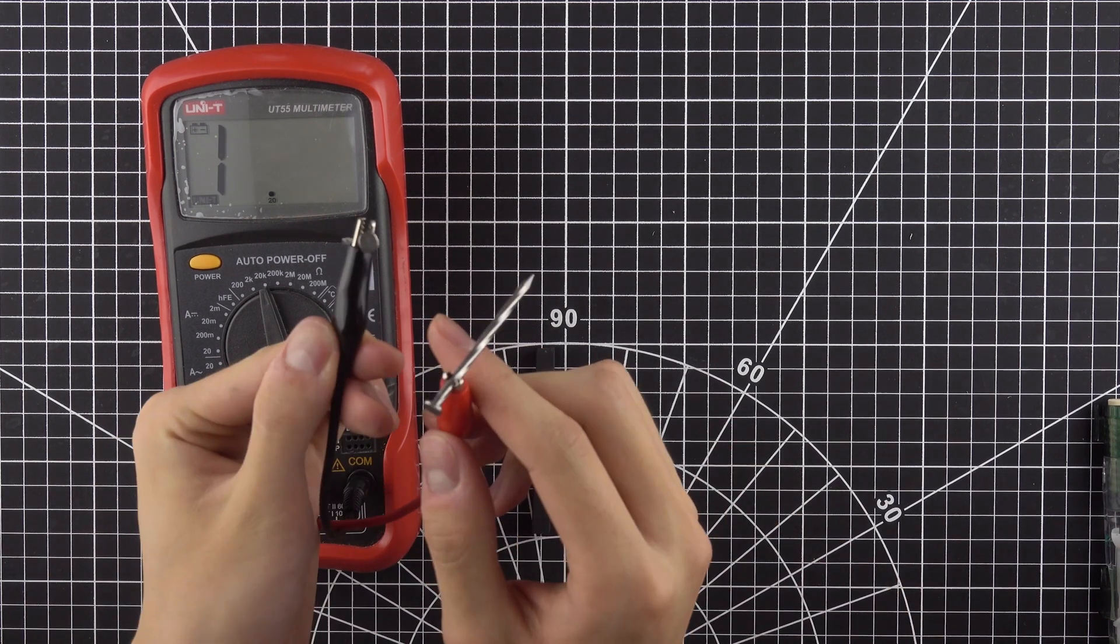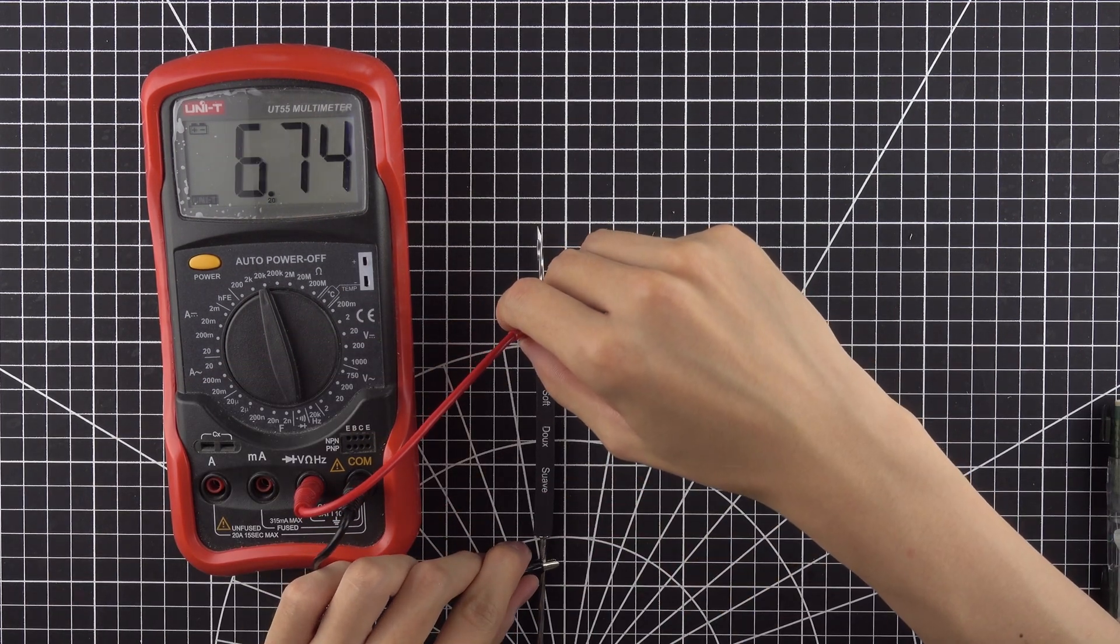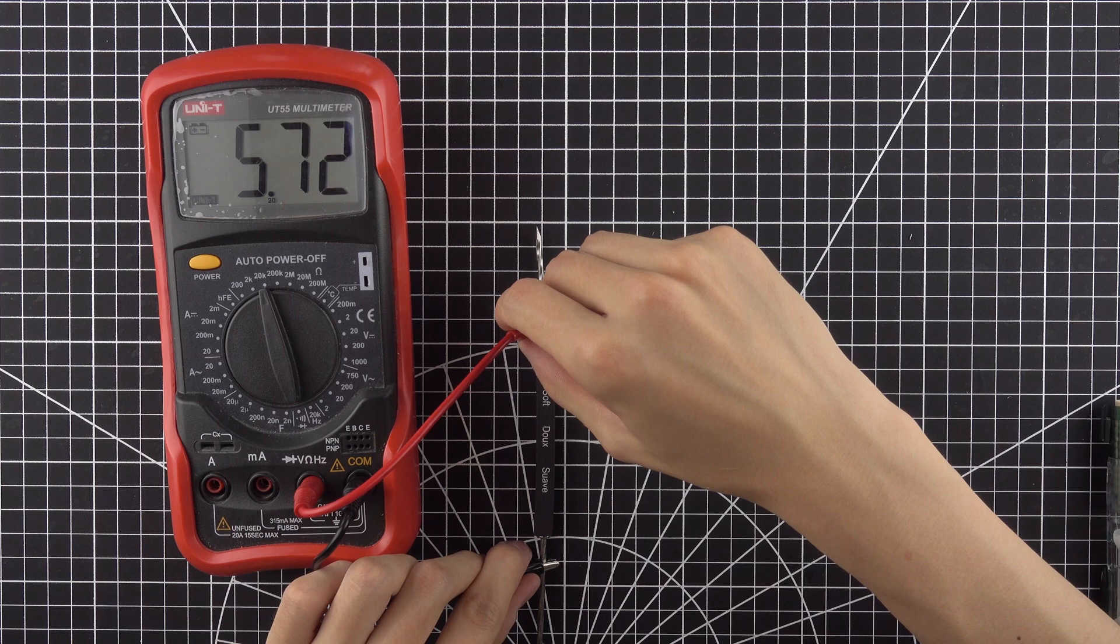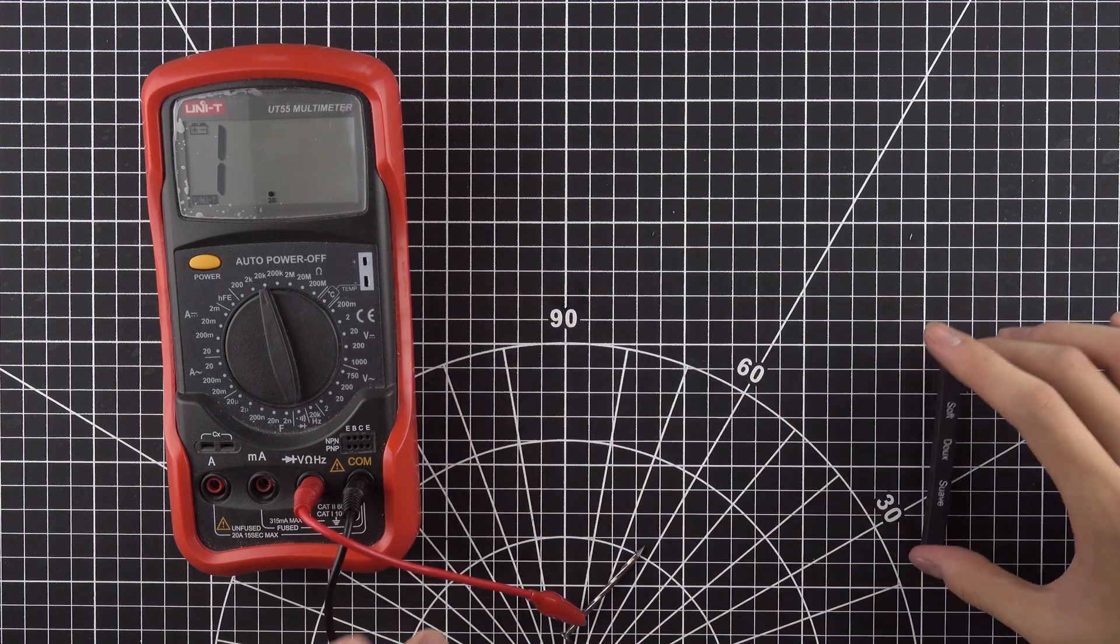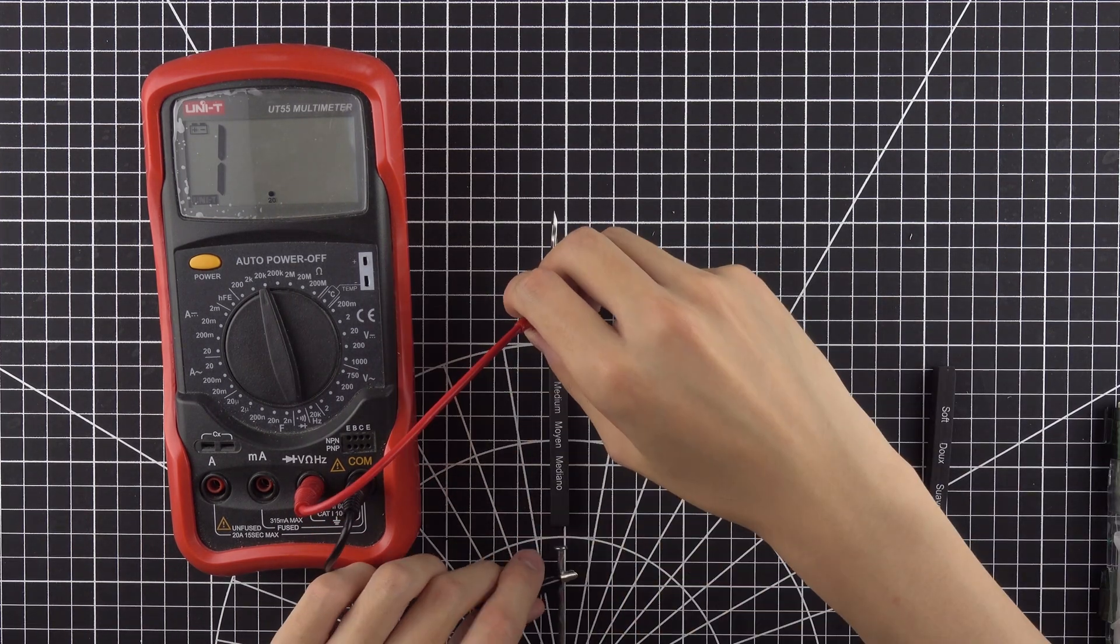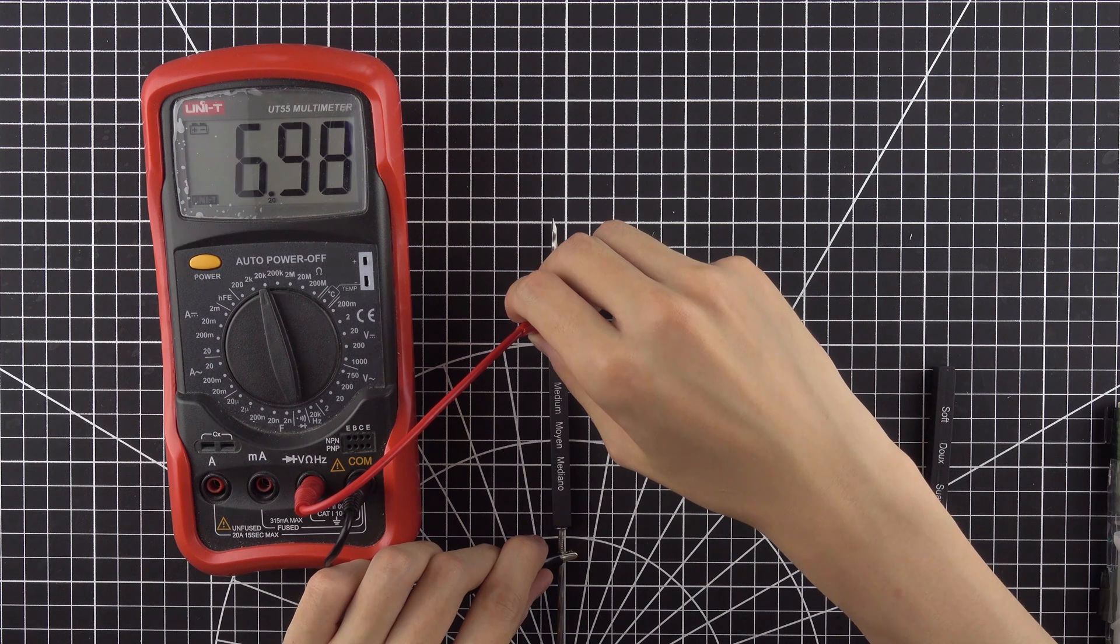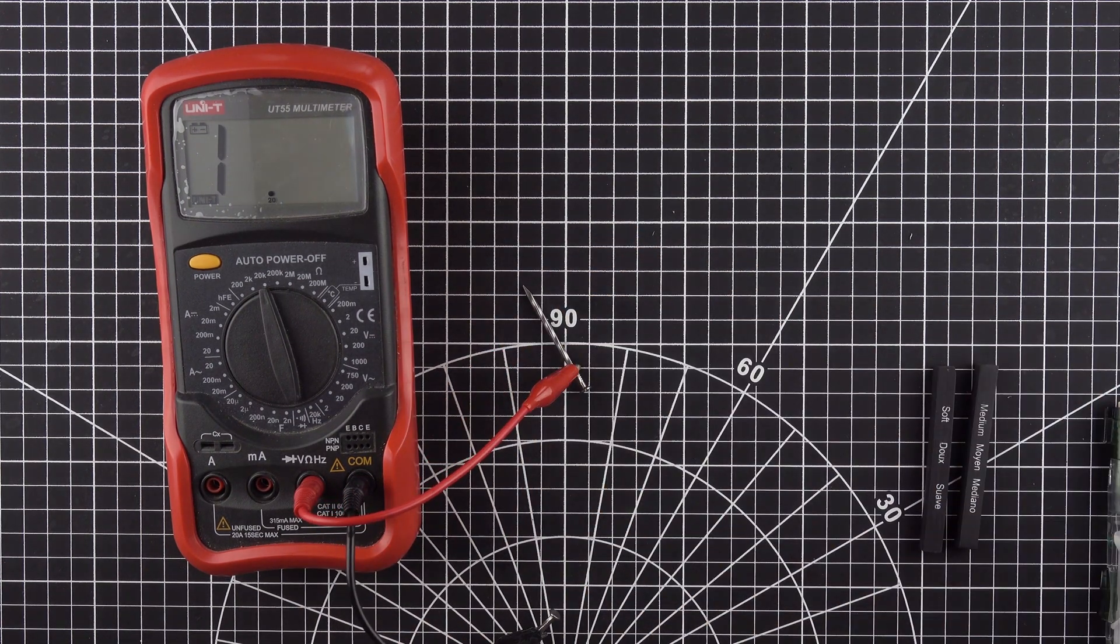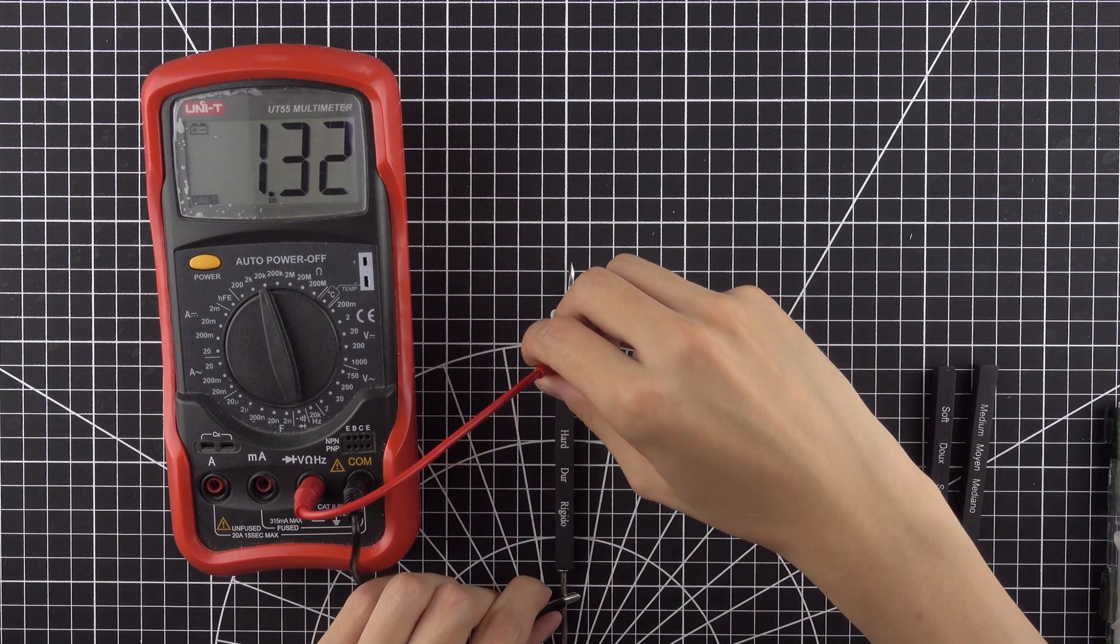Now we can examine the resistance of the charcoal sticks by using a similar method. This time, we will only measure the resistance across the two ends. Here we can see that the resistance of the charcoal sticks are in the order of magnitude of kilo-ohms.